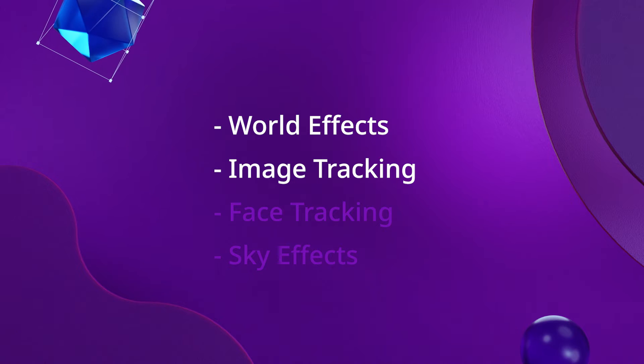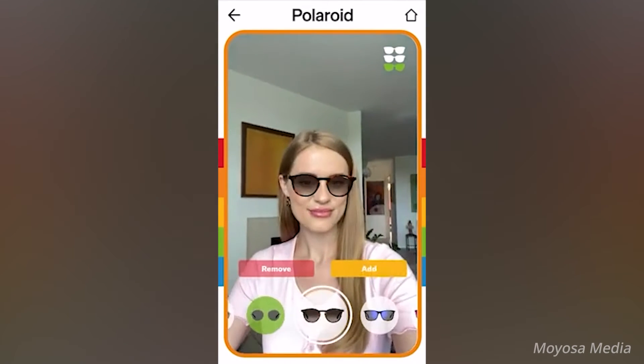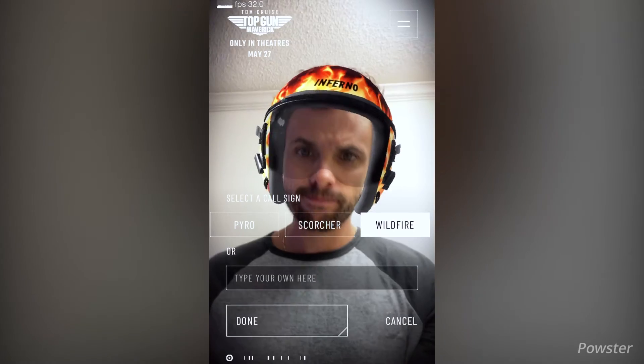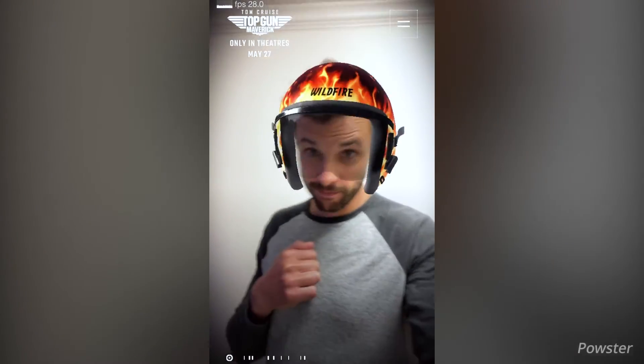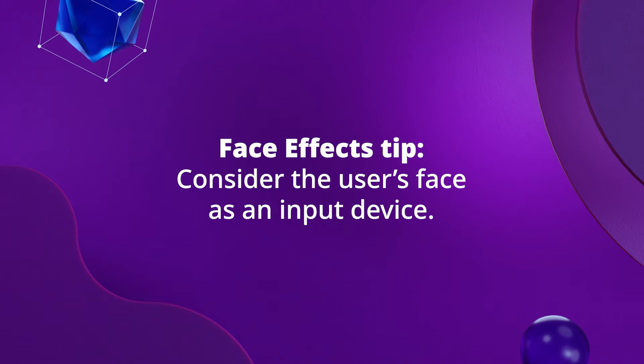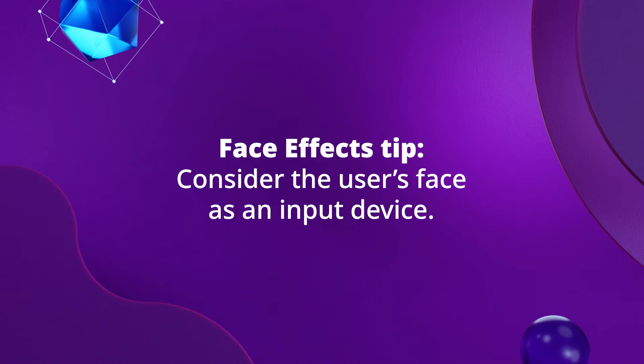Create epic face effects with 8thWall face tracking. The Face Mesh feature provides a unified UV map that enables you to easily paint over the user's face, regardless of their individual facial shape, size, or features. This is a great tool for virtual product try-ons like makeup, glasses, or hats — transforming your users into new characters and giving them new ways to express themselves. One tip for face effects is to consider the user's face as an input device: make your face effect responsive to user gestures, add physics to head movement, or even change the look with a user's smile. Users will love playing with the triggers and your experiences will be more engaging and interactive.